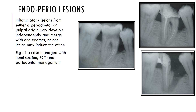Endoperio lesions are inflammatory lesions from either the periodontal or pulpal origin and may develop independently and merge, or one lesion may induce another. The case shown demonstrates a molar with large occlusal caries involving the pulp, a broken instrument in one root, a periodontal defect, and radiolucency at the apex. The tooth was treated with both endodontic and periodontic treatment, including root canal treatment and hemisection — as all endoperio lesions require both endodontic and periodontic treatment.